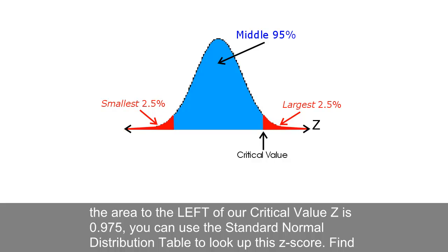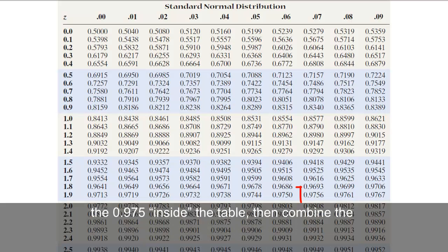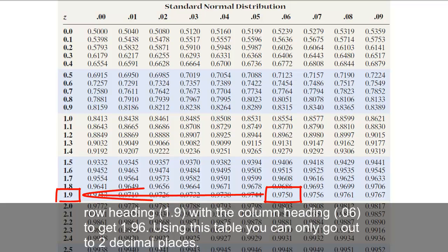you could use the standard normal distribution table to look up the z-score. Find the 0.975 inside the table.